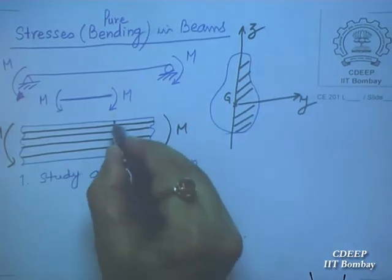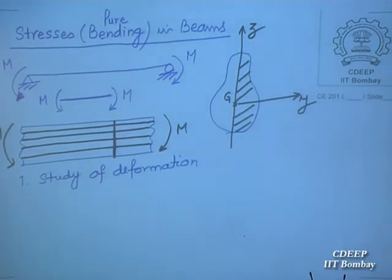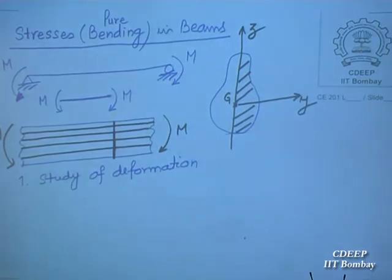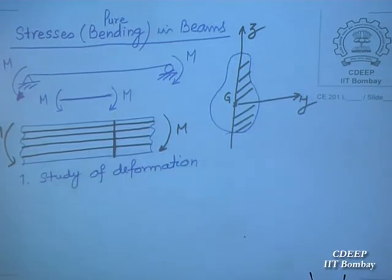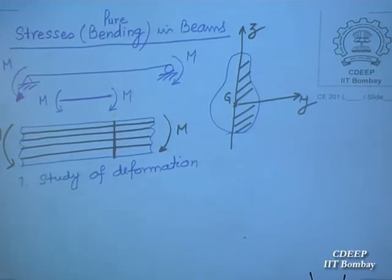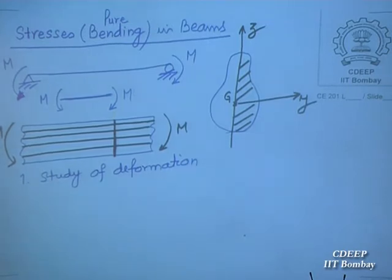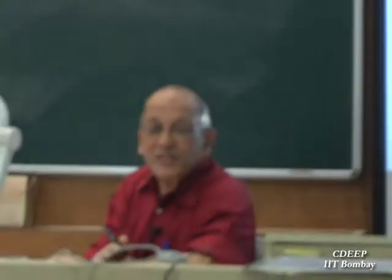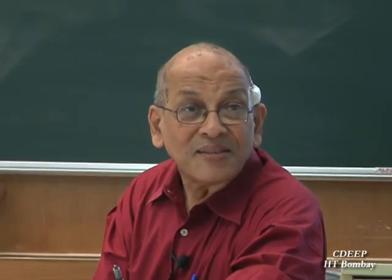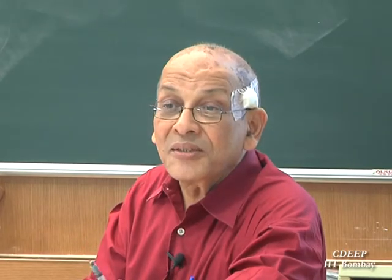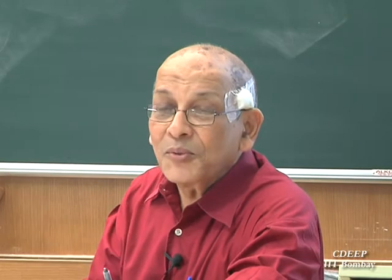The transverse normal — if you take the cross section, this line (the trace of the cross section) is the normal. This normal will remain straight and normal to the neutral axis throughout deformation. This is the Kirchhoff hypothesis. Some books, like those by Vajirani and Ratwani, state it as 'plane sections remain plane before and after bending,' which students memorize for examinations.